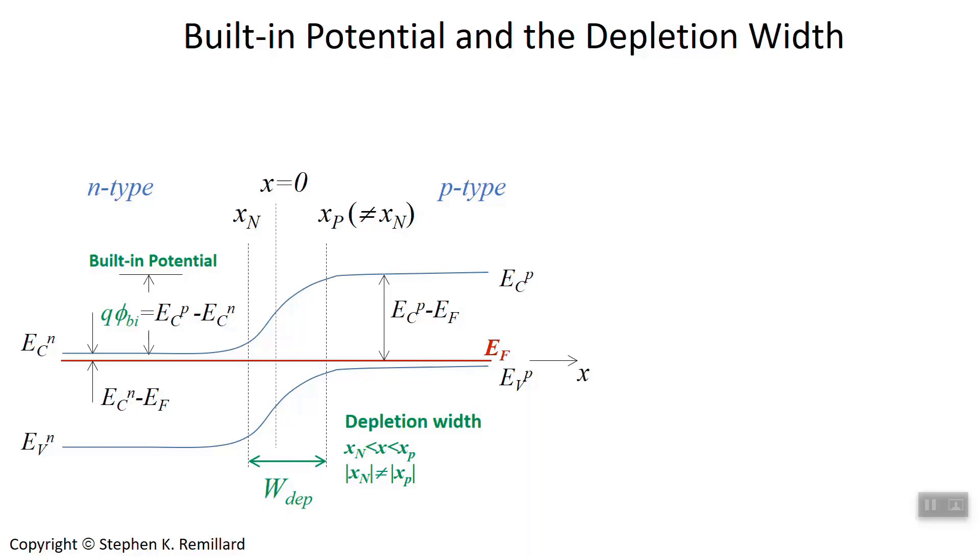Two important quantities to feel comfortable using in calculations are the built-in potential and the depletion width. Let's talk about the built-in potential here, which you can then use to calculate depletion width. So here's the energy band diagram for a P-N junction with the conduction band edge taking a step up at a junction.